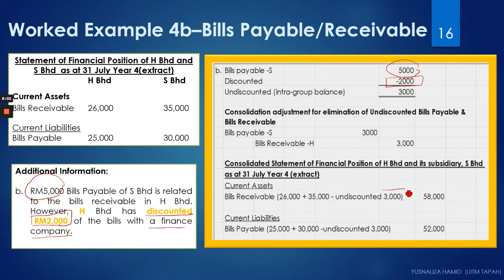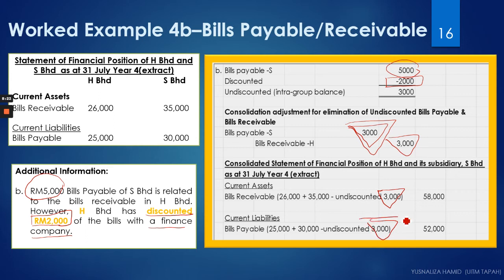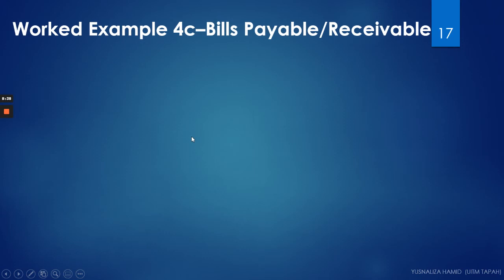When you debit the bills payable by 3,000, that reduces the bills payable; and when you credit, that reduces the bill receivable. After combining parent and subsidiary figures and doing the elimination for the undiscounted bills, you get a total of 52,000 for the consolidated bills payable. Done with that scenario.